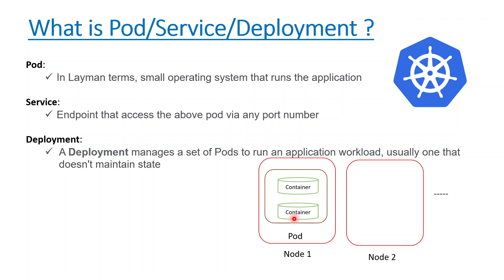One pod can contain either one container or multiple containers. If any particular application has an endpoint — like a MySQL server or any web service — that needs to be exposed, we expose it with the help of the service component in Kubernetes to a particular port number like 8080 or 3000. Deployment is an arrangement that manages all the pods running for that application. A MySQL deployment will maintain the pods and service running under it. One node can have multiple pods, and a cluster may contain one or multiple nodes.